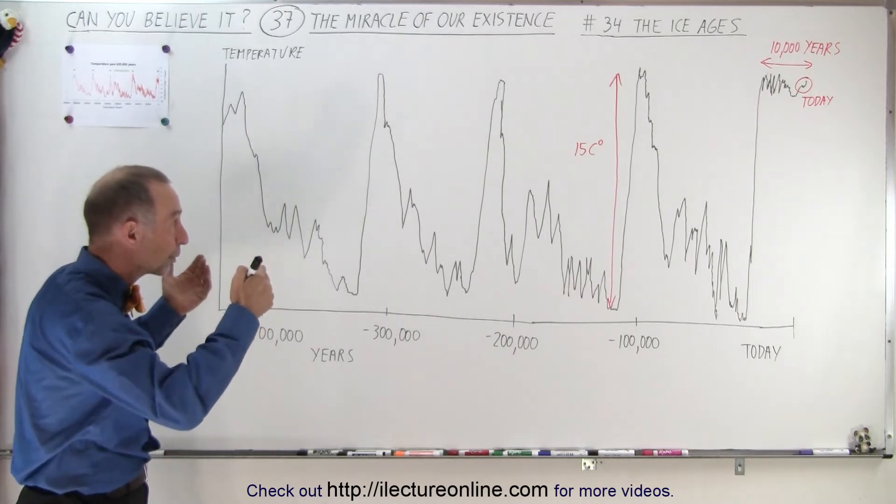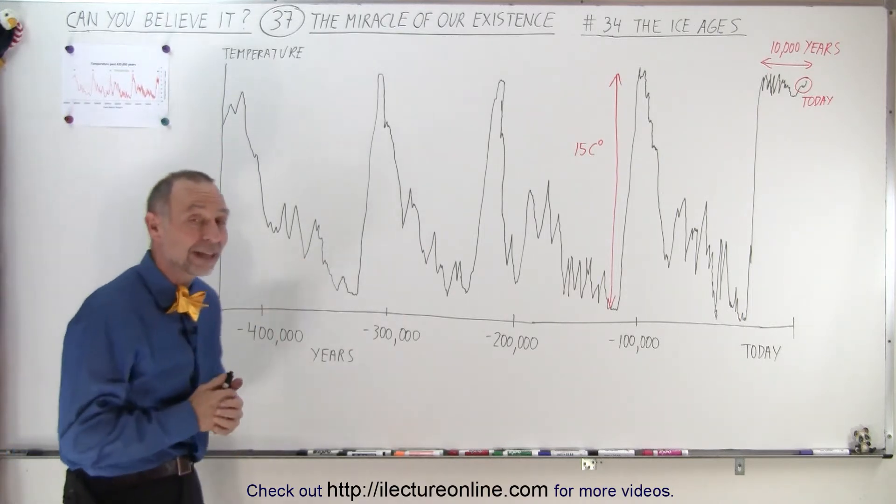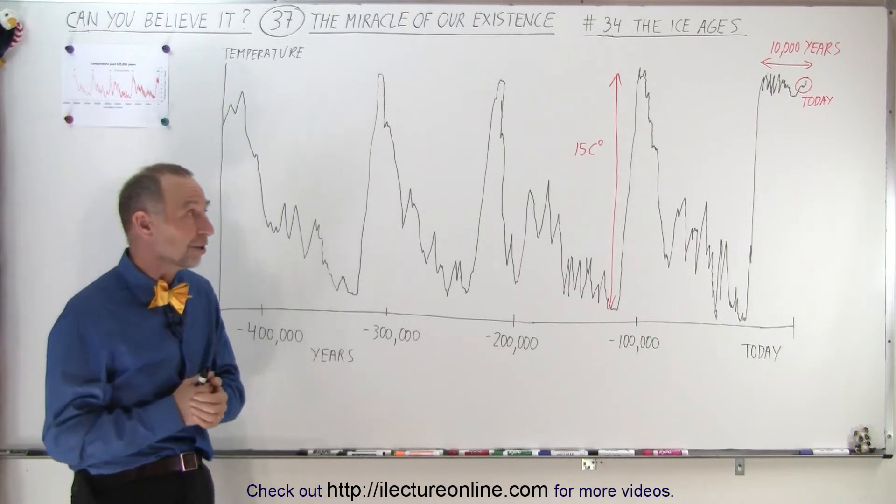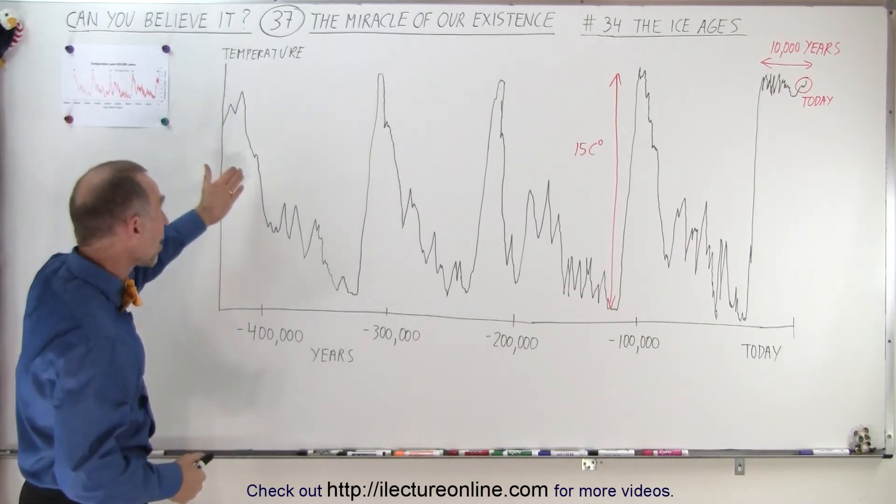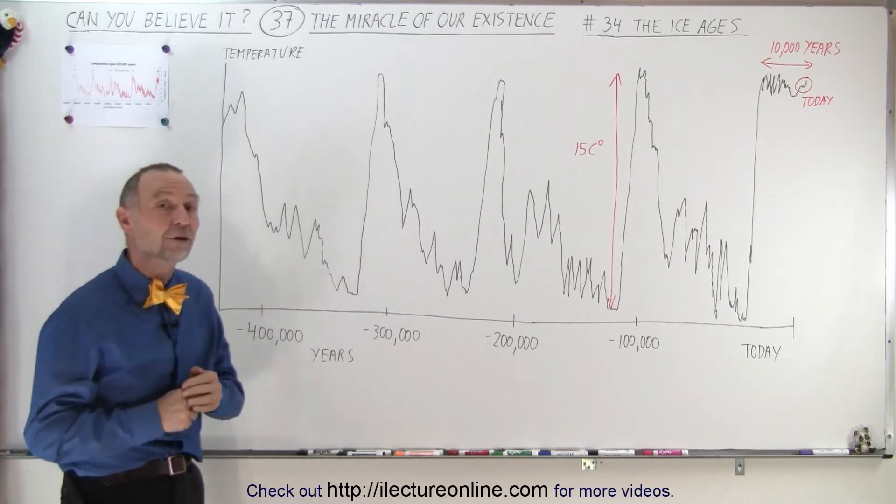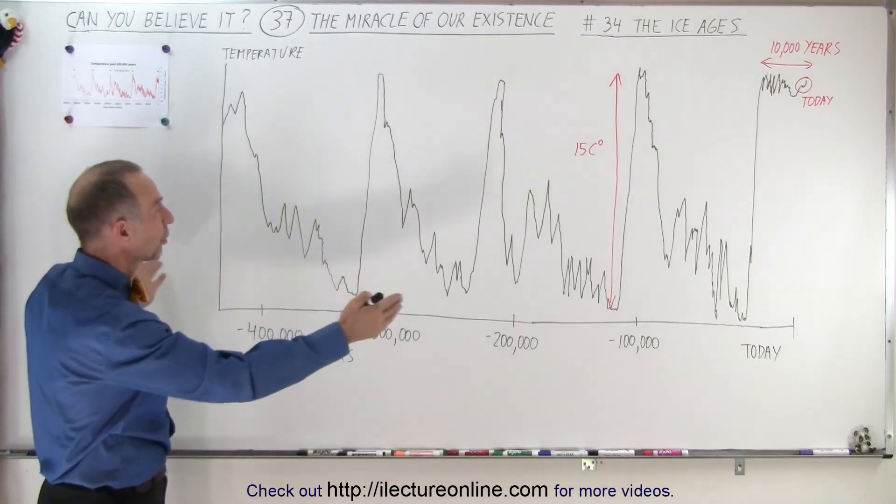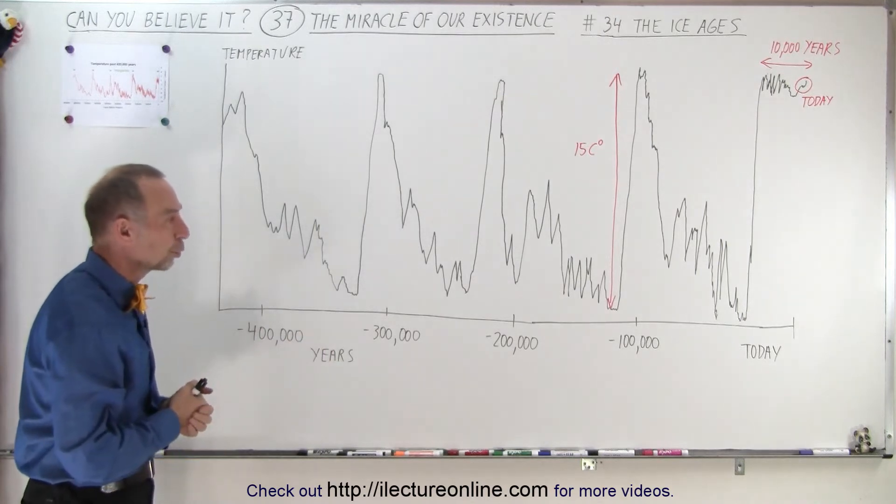It looks like we're going to plunge into the next ice age and those ice ages last for about 100,000 years. And when they begin, they go very, very fast. Temperatures drop precipitously in a very short period of time compared to the duration of this very cold period.